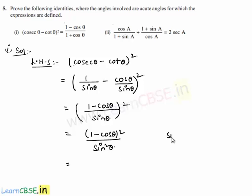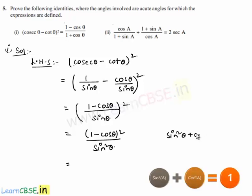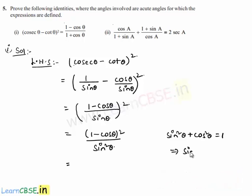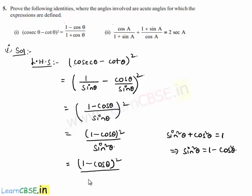From the identity, we have that sin square theta plus cos square theta is equal to 1, which implies sin square theta is equal to 1 minus cos square theta. Let us substitute it here. Then it becomes 1 minus cos theta whole square divided by 1 minus cos square theta.